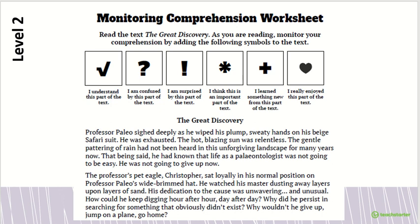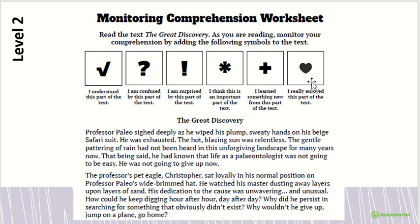This is a level two task — our monitoring comprehension activity. You're going to read a text called The Great Discovery, and while you're reading, you're going to make little notes on your sheet. Put a tick for parts where you understand, a question mark if you're confused, an exclamation mark if you're surprised, a star if you thought it was important, a plus if you learned something new, and a heart if you really enjoyed that part of the text.